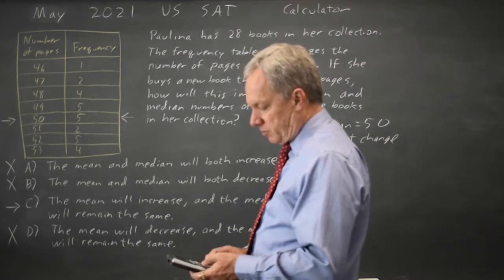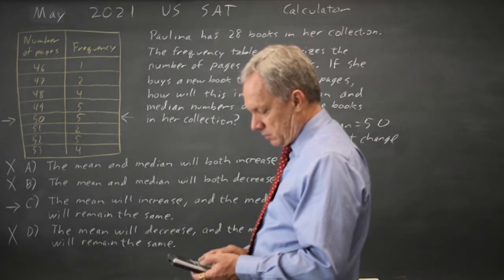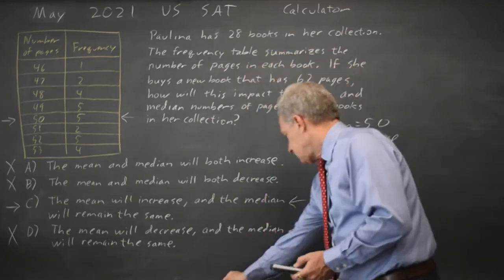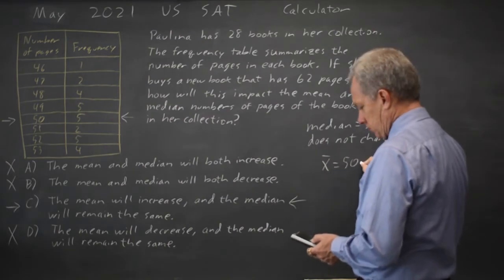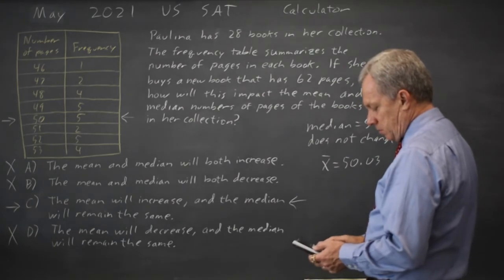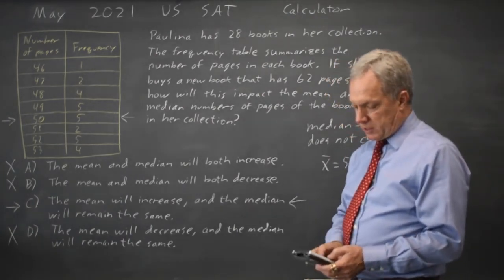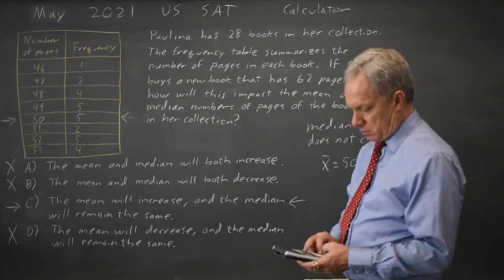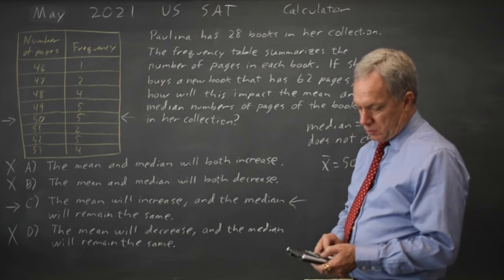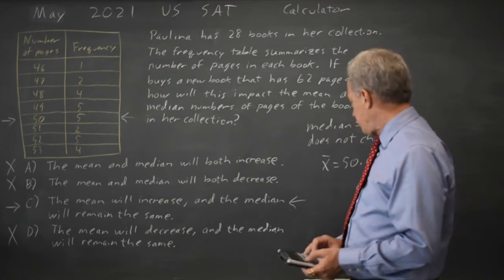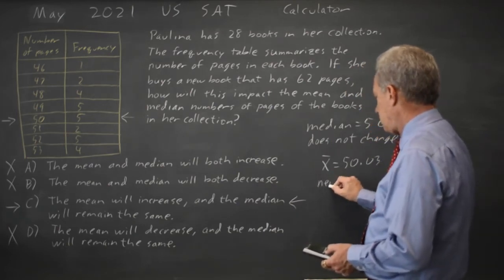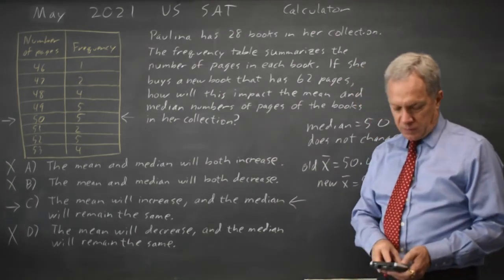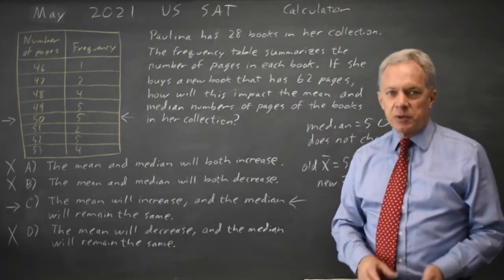If I calculate one variable statistics, I get a mean of 50.03. And if I go back into stat, edit, and add one more observation, the new book was 62 pages, and there's one of those. One variable statistics says the mean is now 50.4, and the median is still 50. So we can compute the answers exactly.